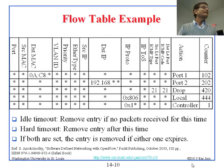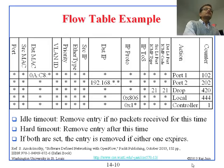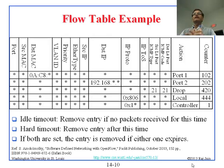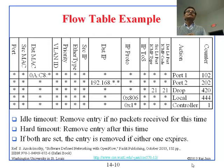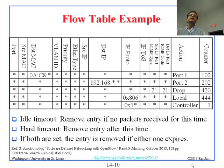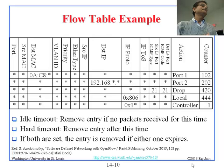A question was raised: how can a layer 2 switch look at layer 4 headers? The answer is that the layer distinctions are not rigid anymore. Today we have layer 7 switches that examine everything from layer 2 to layer 7 and decide what to do. OpenFlow switches are effectively layer 4 switches that look at all the listed header fields.